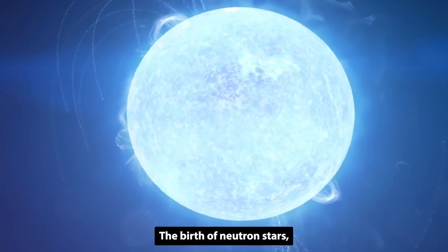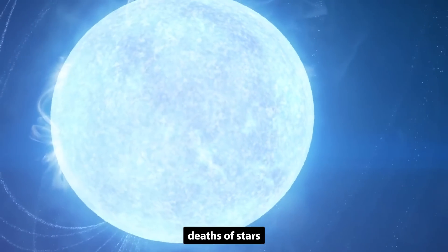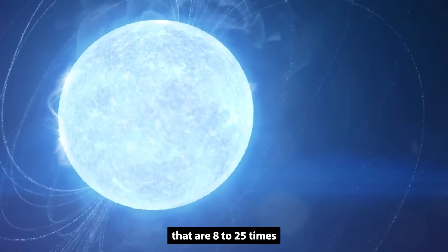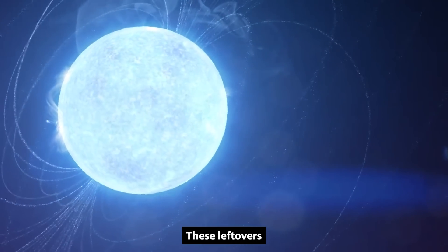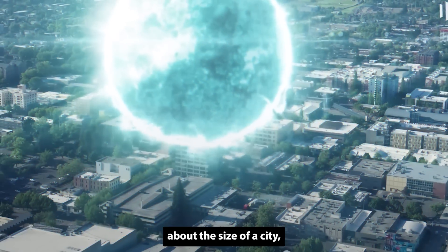The birth of neutron stars, including magnetars, occurs through the explosive deaths of stars that are 8 to 25 times the mass of our Sun. These leftovers compress into incredibly dense spheres about the size of a city, but with a mass comparable to that of the Sun.